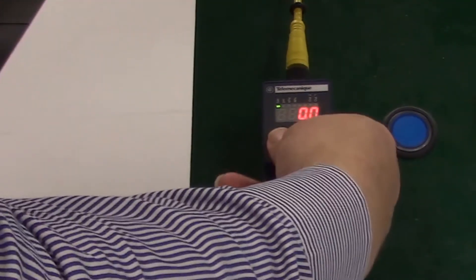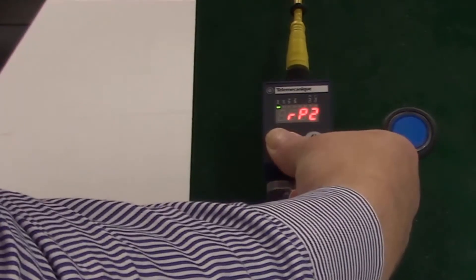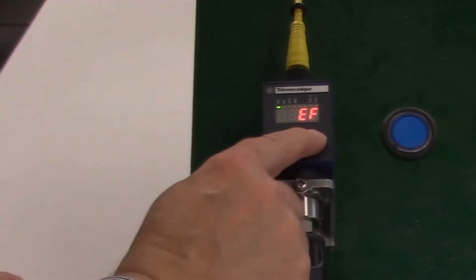Press the up down button to scroll to the EF Extended Function menu, then press the left right button to confirm.